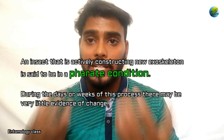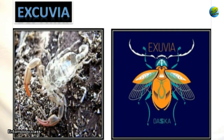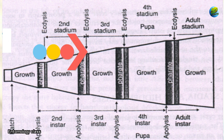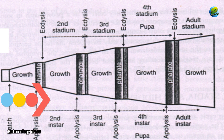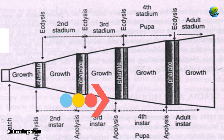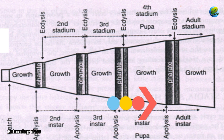An insect that is actively constructing the new exoskeleton is said to be in the perid condition. The cuticular part removed during molting — the exuvia — is used by biologists for species identification. The time interval between two consecutive molts is known as the stadium. For example, the interval between the first and second molt is the first stadium, and between the second and third is the second stadium. Instar refers to the larval form obtained after molting, continuing from first instar onward until the immature stage matures into adult.